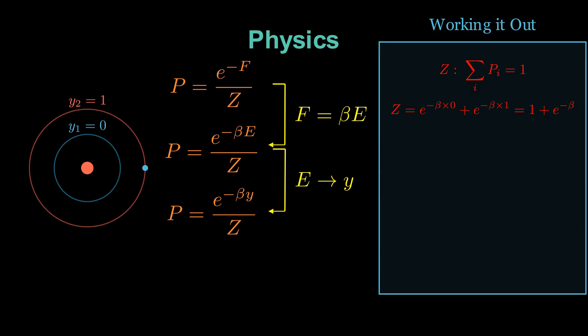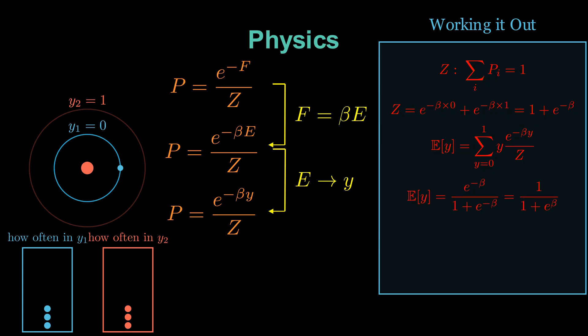Now, we can calculate the expected value of Y, which in physics represents the average energy level. How often the electron is in one of two possible orbits on average? After expanding the sum explicitly, we arrive at a simple equation for the expected energies.